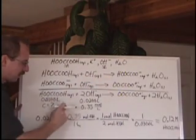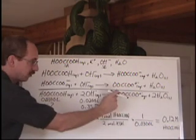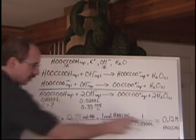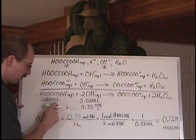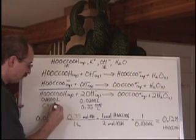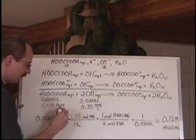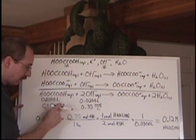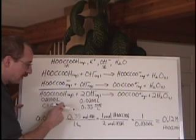Whatever the moles are here at the equivalence point, we have the same number of moles here because it's a 1 to 1 ratio. How do you get the moles? Concentration of that chemical here, which we now know is 0.12 moles per liter. Concentration times volume will get you moles.